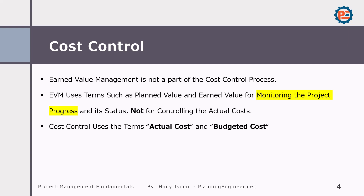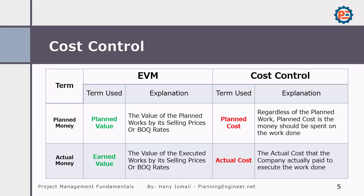I prepared a table where we can find the differences between earned value management terms and cost control terms. Let's use a simple concept: planned money and actual money. The planned money in earned value management we call planned value, while the planned money in cost control we call planned cost.